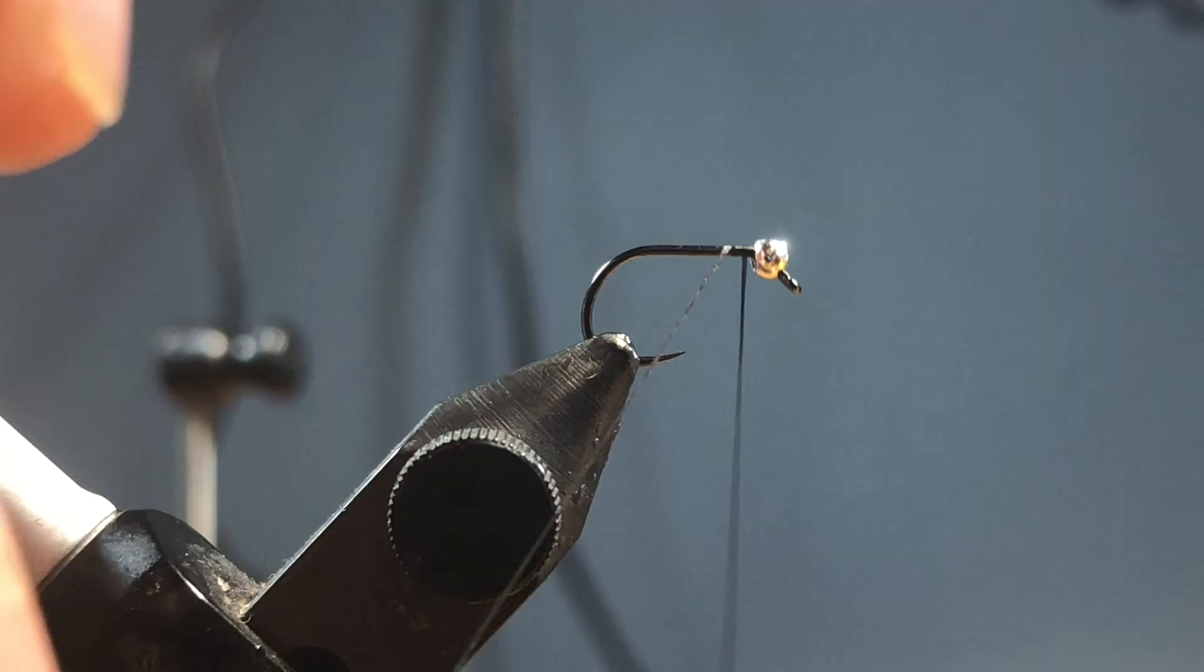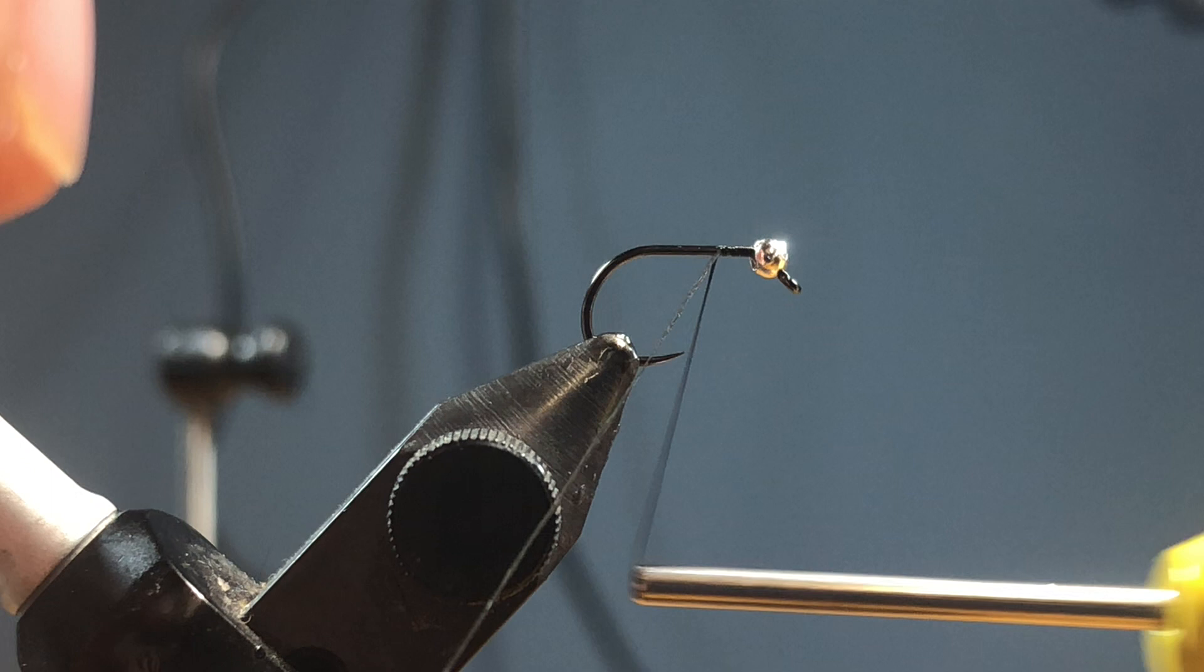In the vise I have a Fulling Mill jig short size 18, loaded up with a 2 millimeter bead, and that is also Fulling Mill tungsten slotted. I'm going to be tying this with some 18-aught Semperfli Nano Silk in black and we're just going to start right behind the bead and wrap back where the barb should be.